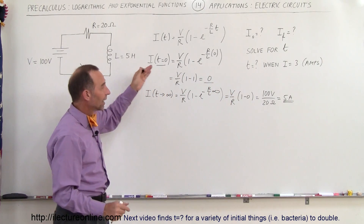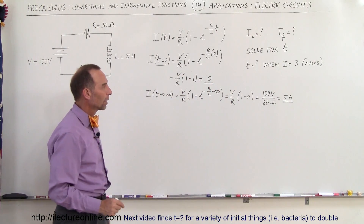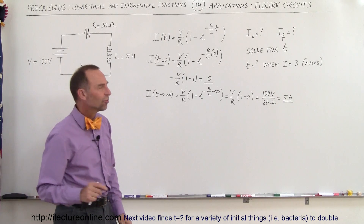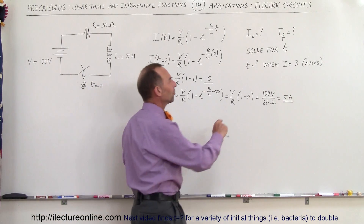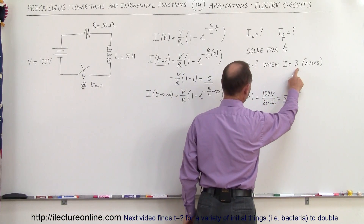So the current starts at 0 amps and goes all the way to 5 amps. How much time will have elapsed when I equals 3 amps?